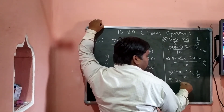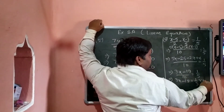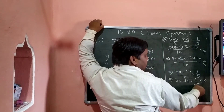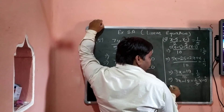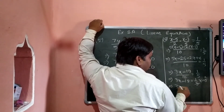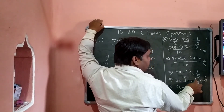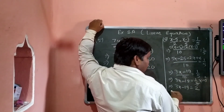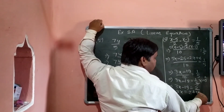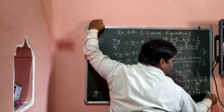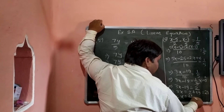3x minus 19 equal to 1 by 5. यह 10 इधर आके multiply हो जाएगा, और 10 by 5 = 2 आ जाएगा। यानि कि 3x minus 90 equal to 2. तो 2 वहाँ है और इधर जाएगा 2. अब 3x equal to 2 plus 19 = 21.